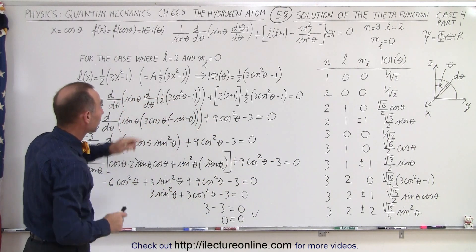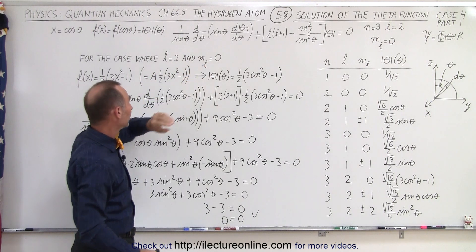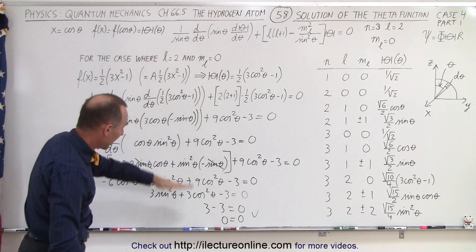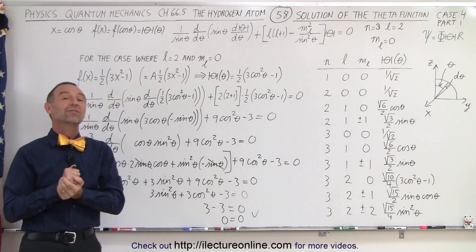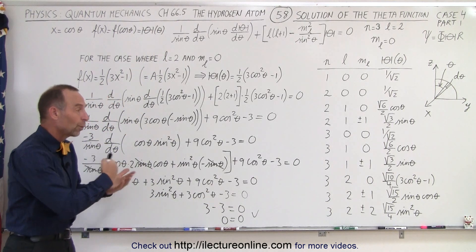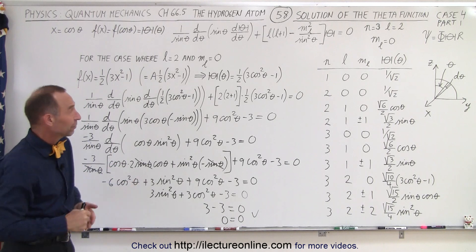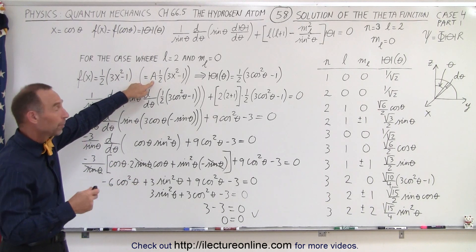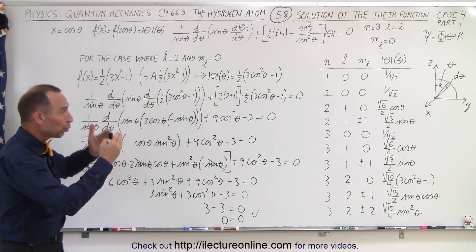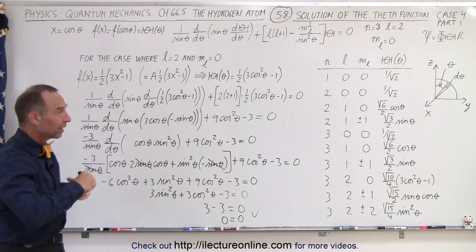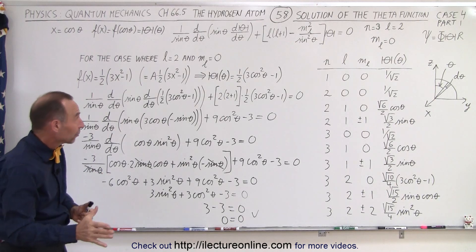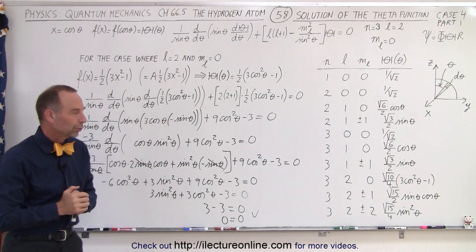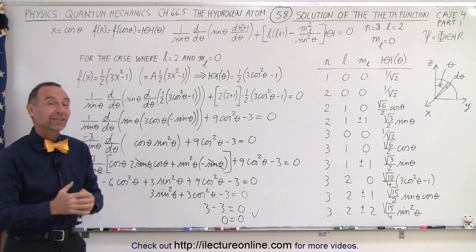Yes, indeed, when we have the case where L equals 2 and M sub L equals 0, this is the solution. We plugged it into the differential equation and it satisfies it — confirming it is one of the solutions. All we have left to do is multiply that solution by an arbitrary constant A, normalize it by integrating so the probability equals 1, and that allows us to find the constant in front. We'll do that on the next video.